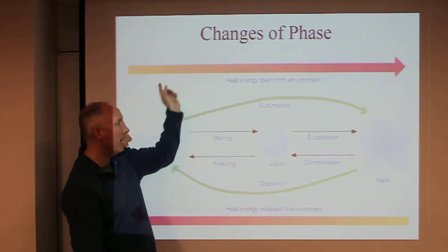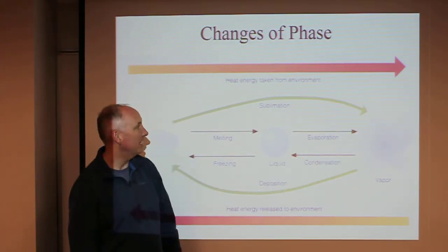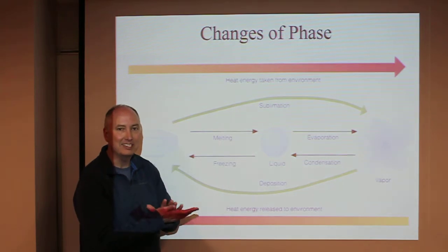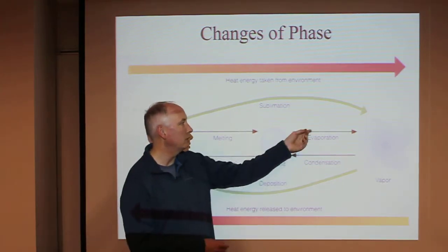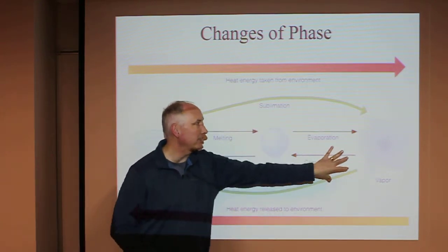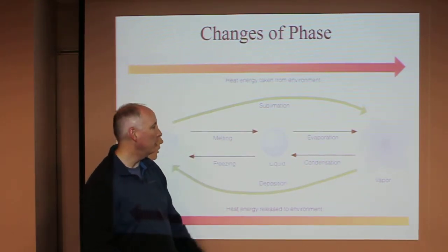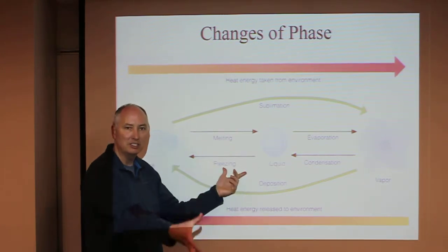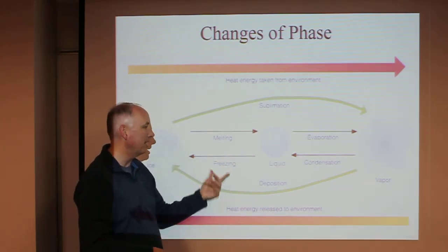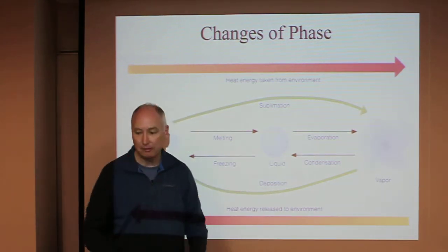Everything that moves in this direction from left to right takes energy from the environment. It takes energy to melt. It takes energy to evaporate. Everything that moves from right to left releases energy. In order to freeze something, you have to give off energy. If you want to condense, it gives off energy. If you go through deposition, it gives off energy.